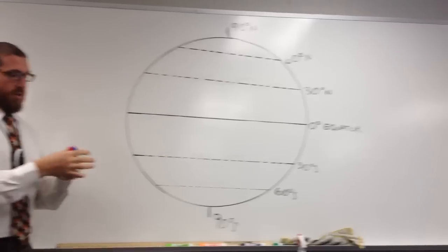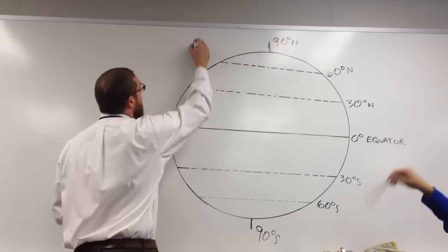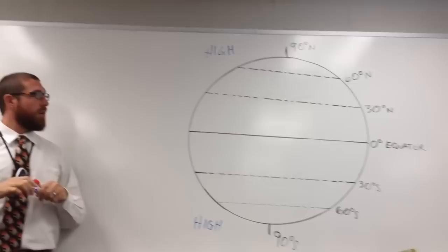High pressure at the poles — because it's cold. So we get high pressure that forms over the North Pole and high pressure that forms over the South Pole. At the equator, the weather's warmer, so we end up with low pressure.